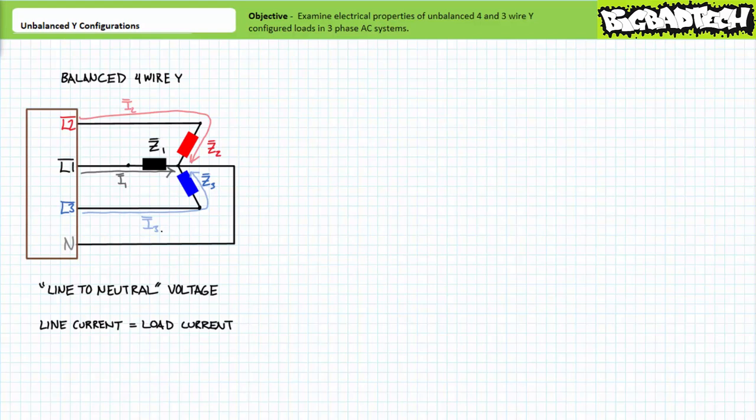Before we begin, it may help to remind ourselves of the properties we discovered regarding balanced Y-configurations. A balanced four-wire Y-configuration is comprised of three identical branch impedances and uses a fourth neutral wire linking the three-phase AC source to the load. Each identical load impedance in a balanced four-wire Y-configuration experiences the line to neutral voltages. Given identical loads and identical voltage magnitudes, load current magnitude and relative phase shift would be the same.